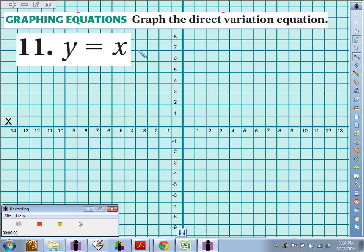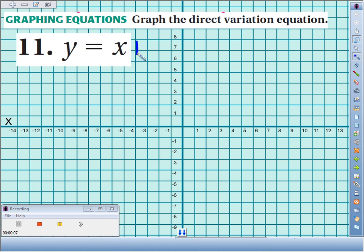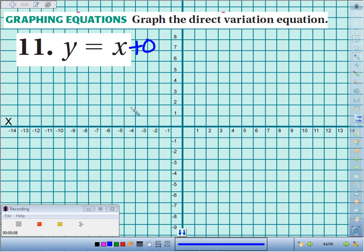Number 11, we're supposed to graph the equation y equals x. All direct variation equations have a y-intercept of 0. There's no plus or minus of anything, so we can always plot that y-intercept at the origin.